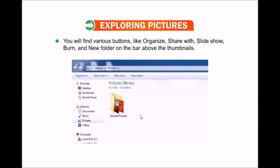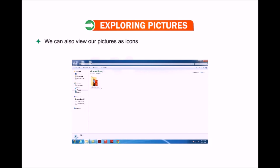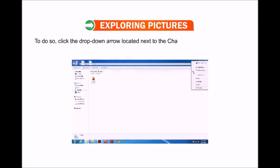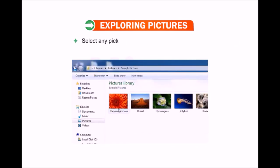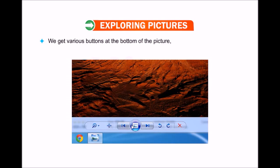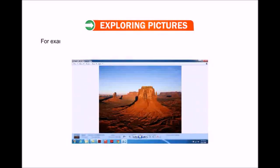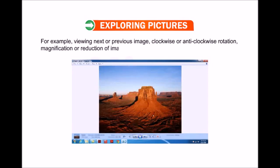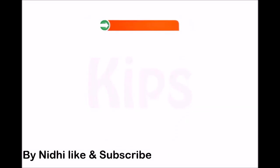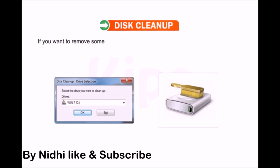We can also view our pictures as icons of various sizes. To do so, click the drop-down arrow located next to the Change your view button on the bar above thumbnails. Select any picture and double-click on it to preview. We get various buttons at the bottom of the picture to help manage the view — for example, viewing the next or previous image, clockwise or anti-clockwise rotation, and magnification or reduction of the image. We can also use the Display Slideshow option to run pictures in automated mode.